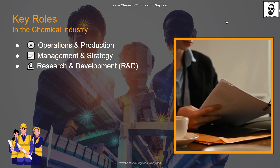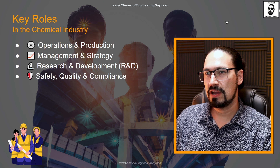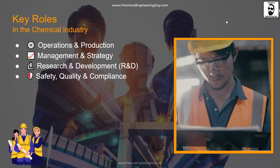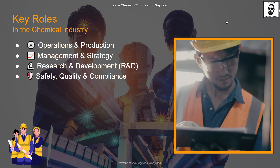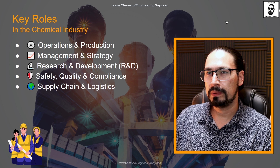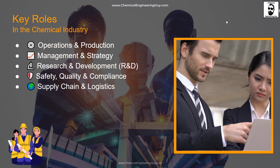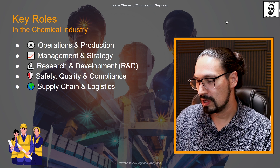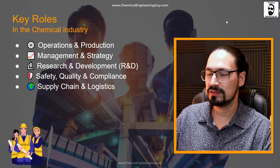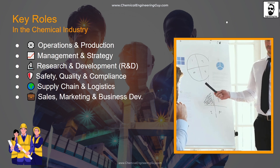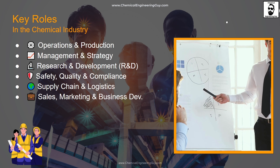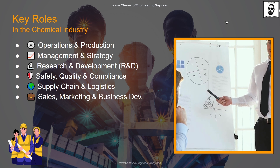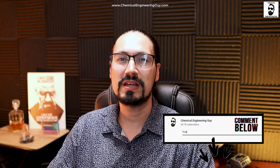Research and development is much more towards lab work. Safety, quality, and compliance covers those in charge of maintaining compliance with safety, environmental, and quality standards. Supply chain and logistics includes persons responsible for obtaining raw materials, transportation, storage, and logistics for sending out final products. Sales, marketing, and business development are those in charge of actually selling the final products — they need to be familiar with both the product and their clients. These are the main category areas we can use to describe roles in the chemical industry.